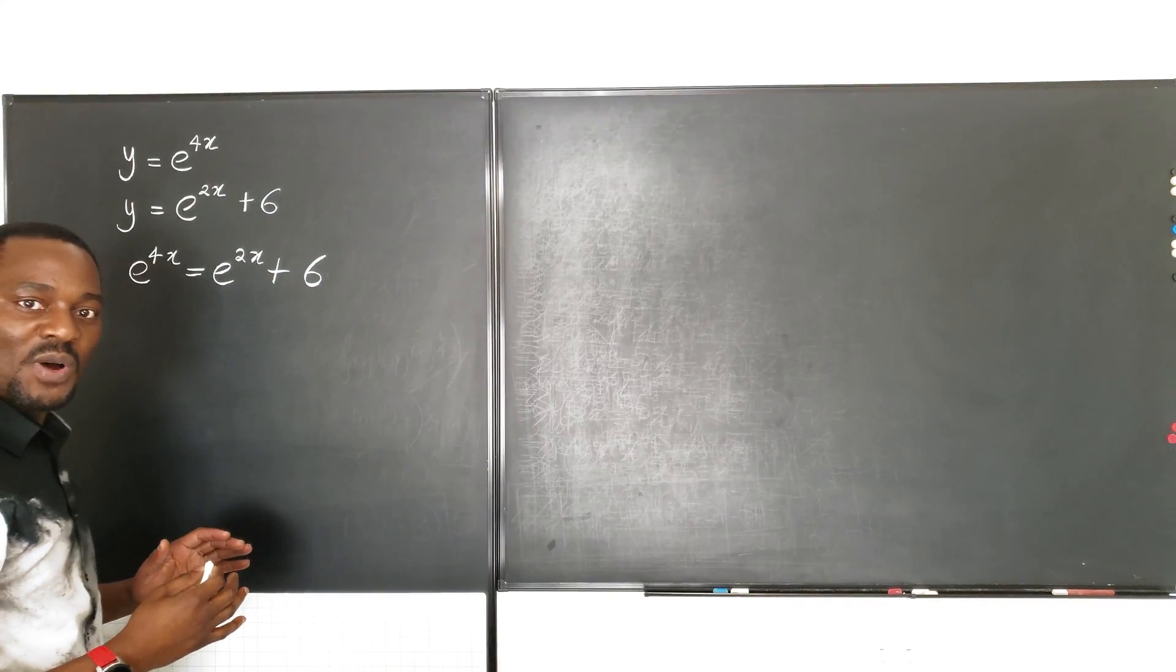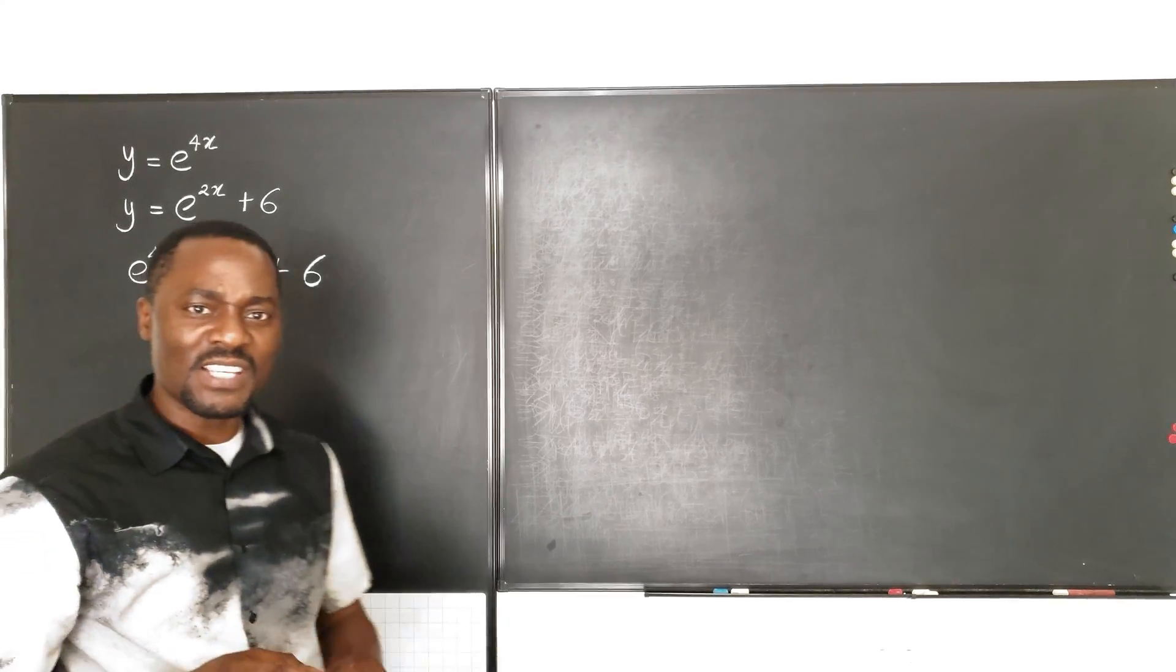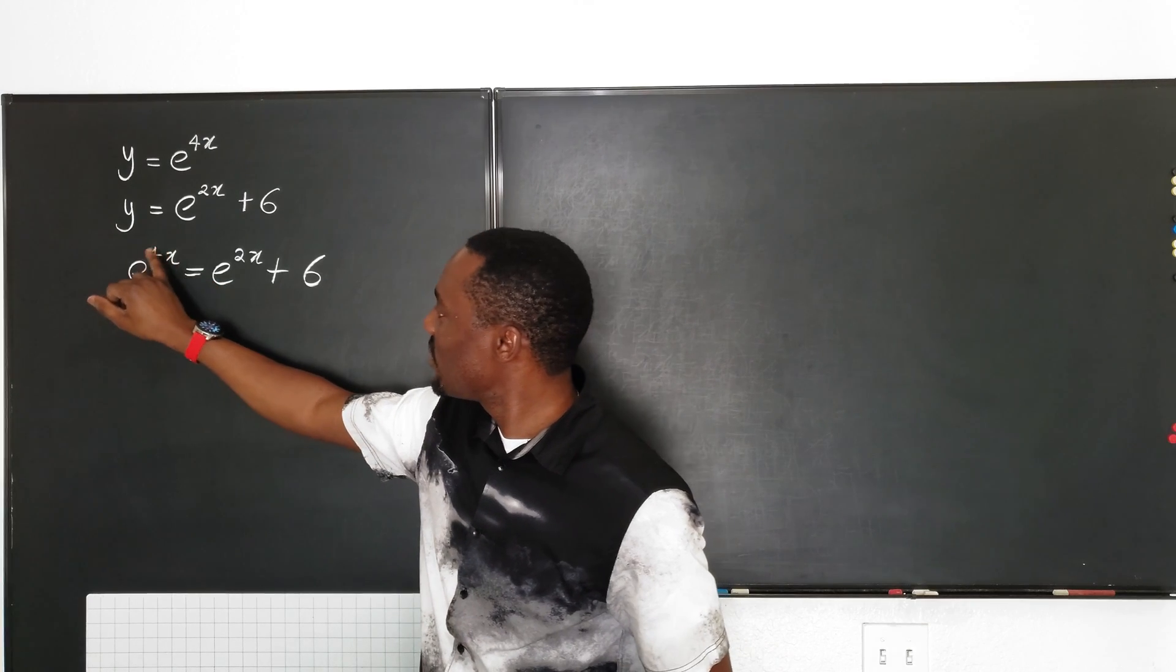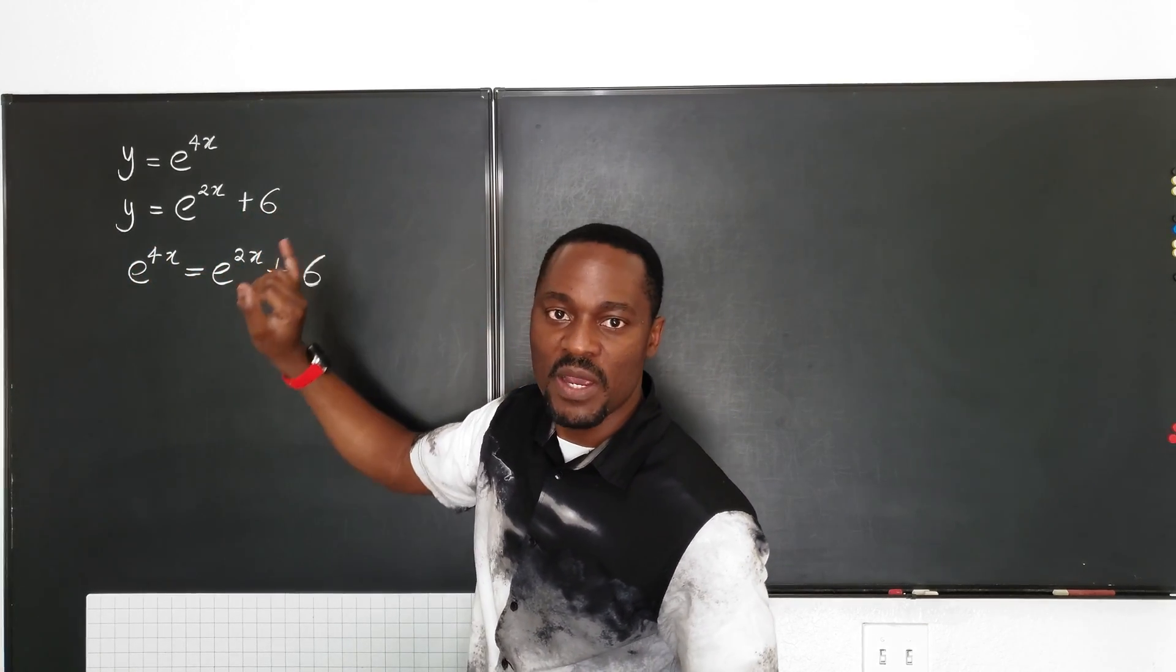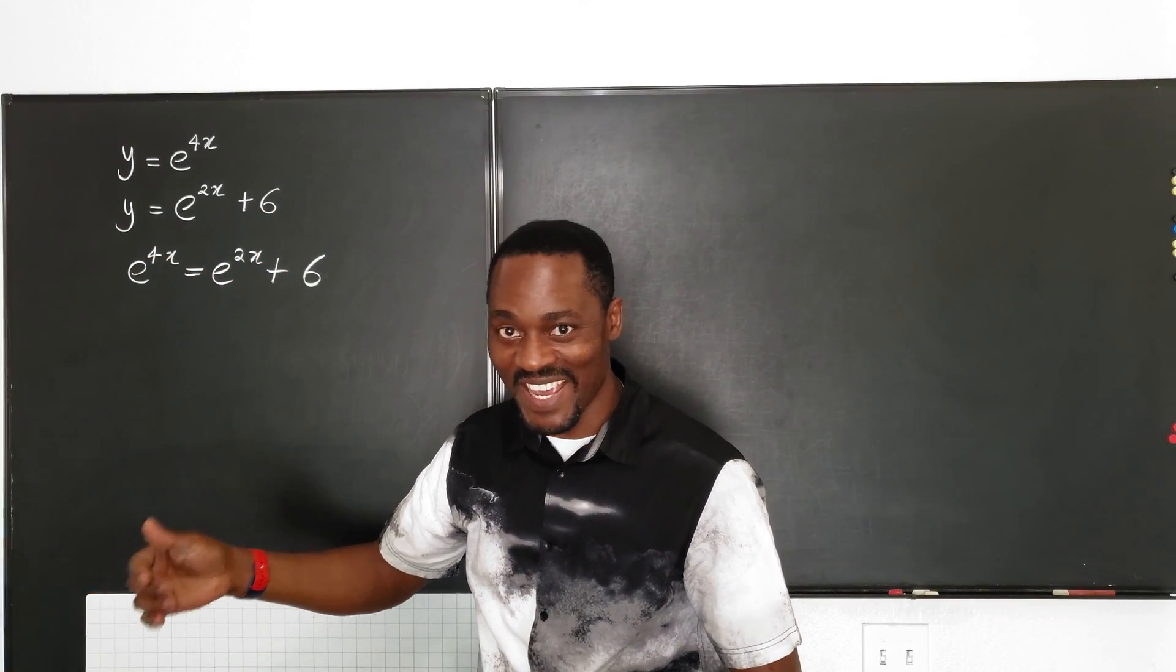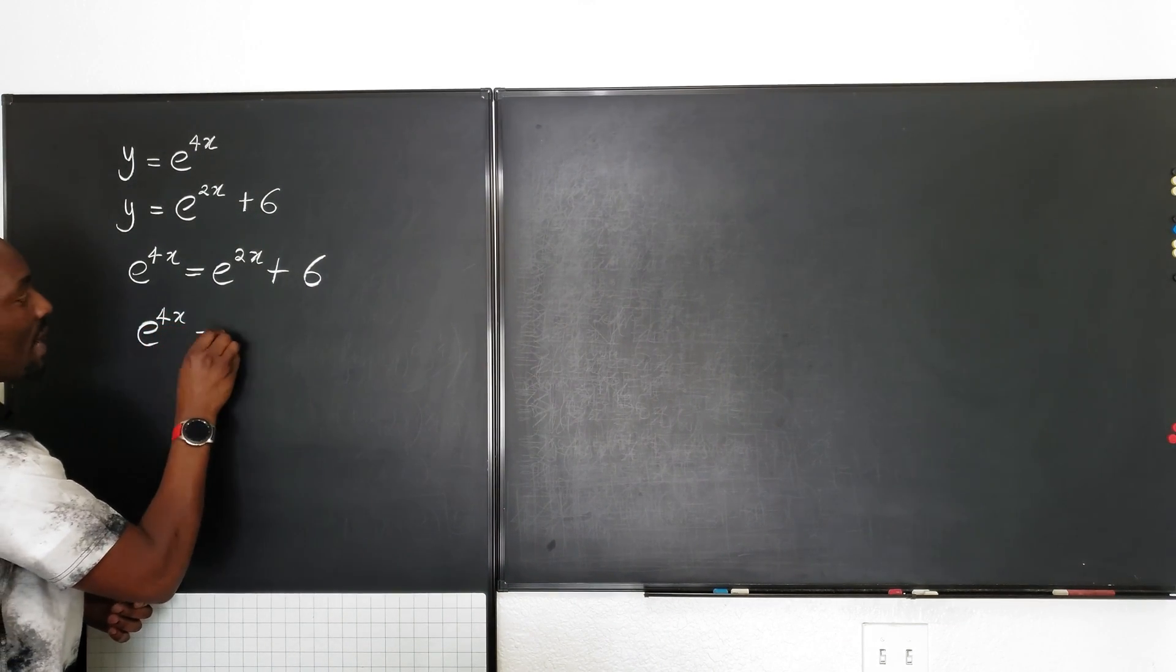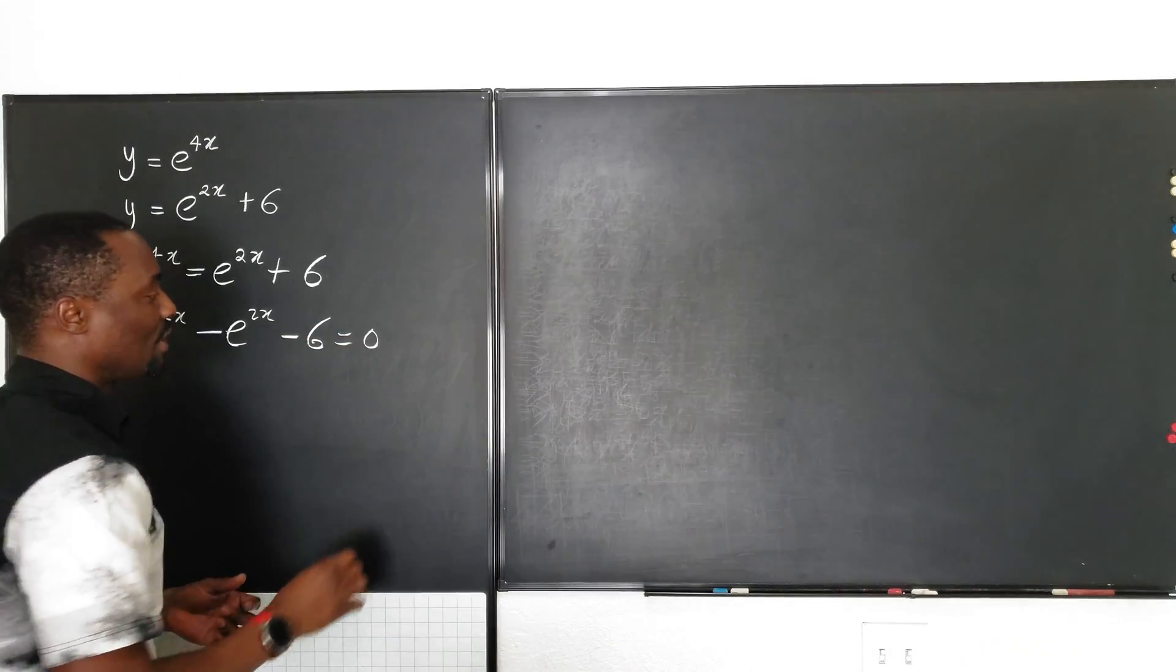Well, I can take everything to one side and have something equal to zero. As you begin to see, you can see that this is the square of this because e to the 4x is e to the 2x squared. Remember the laws of exponents. So this is going to be e to the 4x minus e to the 2x minus 6 equals zero.